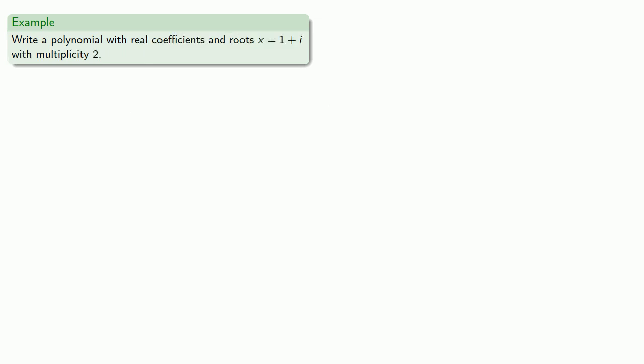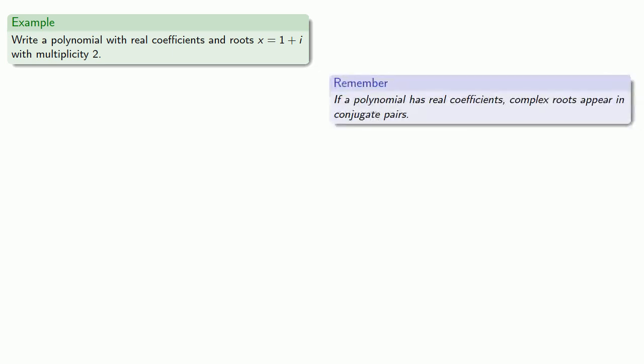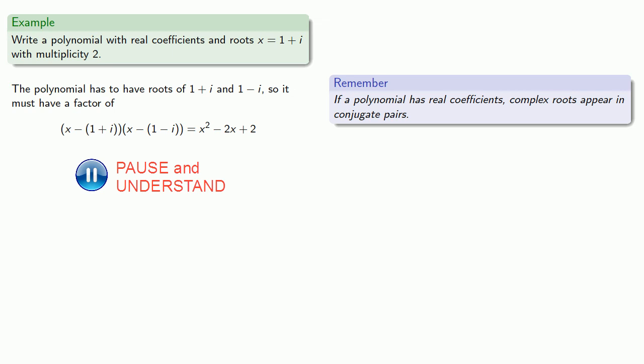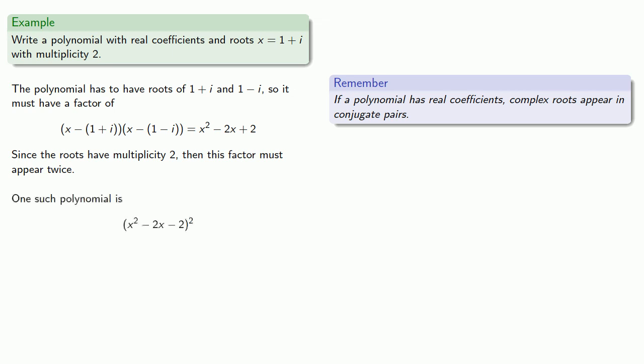And we can even include complex roots. Remember, if a polynomial has real coefficients, complex roots have to appear in conjugate pairs. So the polynomial has to have roots of 1 plus i, and also 1 minus i, and so it must have a factor of... And since these roots have multiplicity 2, then this factor must appear twice. And so one such polynomial will be...